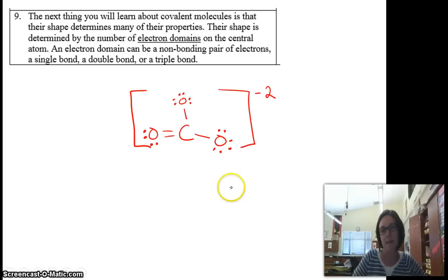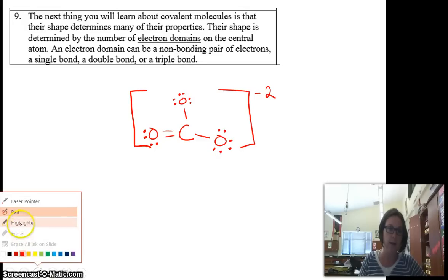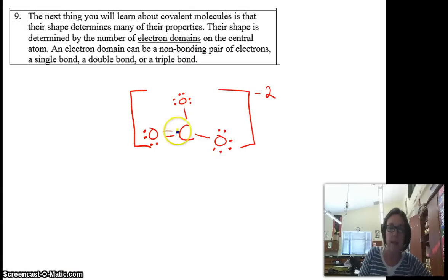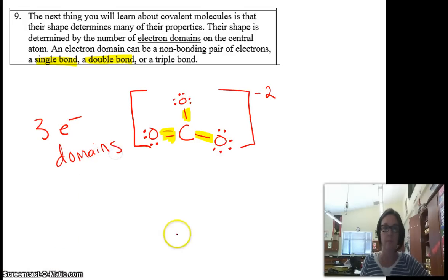So the last thing we do is we're going to check for the number of electron domains. So in this case, our central atom has a double bond and it has some single bonds. So there's one single bond, another single bond, and a double bond. So that's a total of 3 electron domains. And that's the most complicated example I'm going to do for you guys.